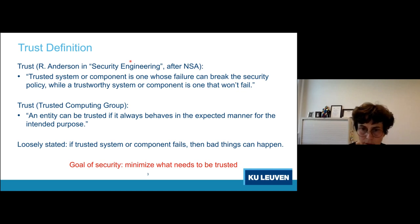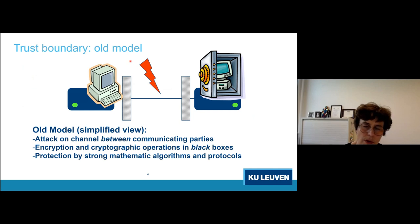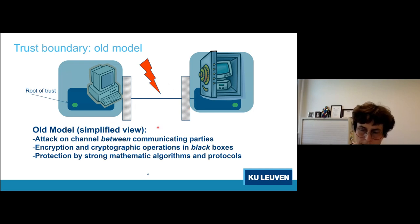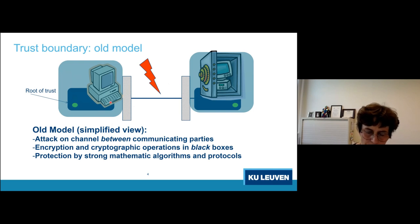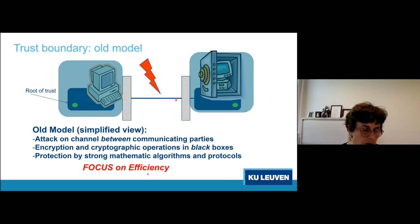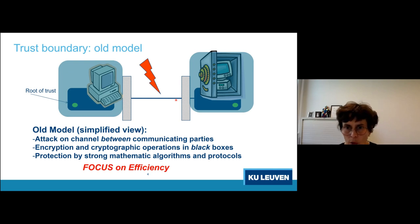In the old trust boundary model, we had PCs and server rooms. The attacker was one who attacked the communication channel between two parties. We assumed strong crypto worked in black boxes — that communication was protected by strong mathematical algorithms and protocols. The job of the hardware designer was really to focus on efficiency: compact implementations, high throughput, low latency, low power.